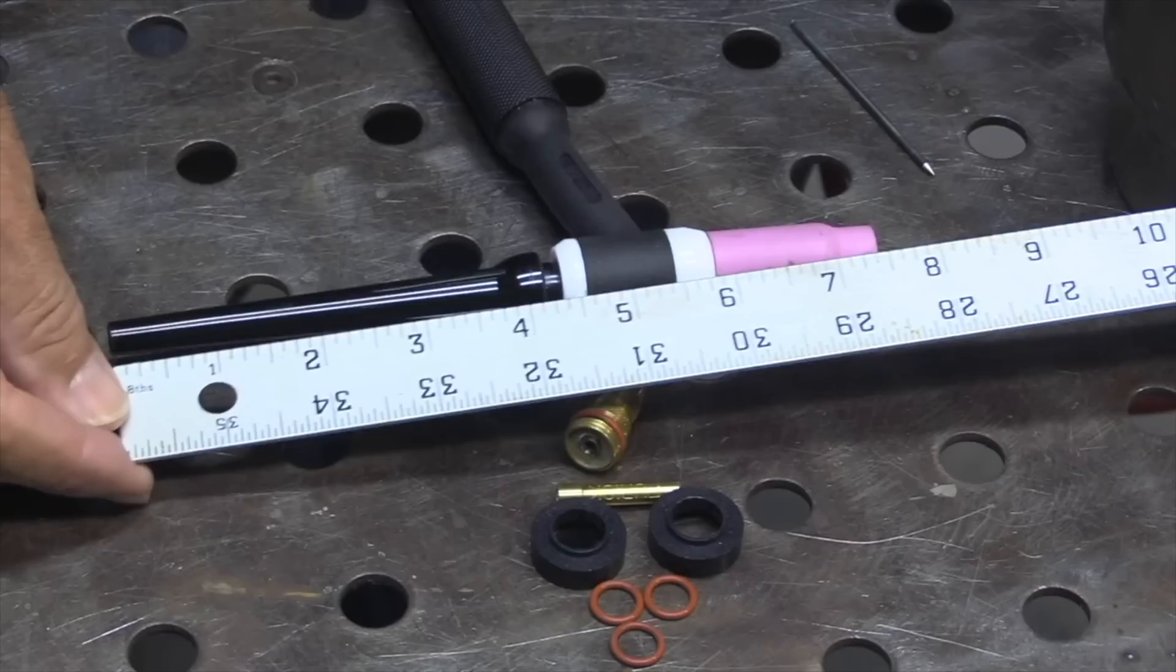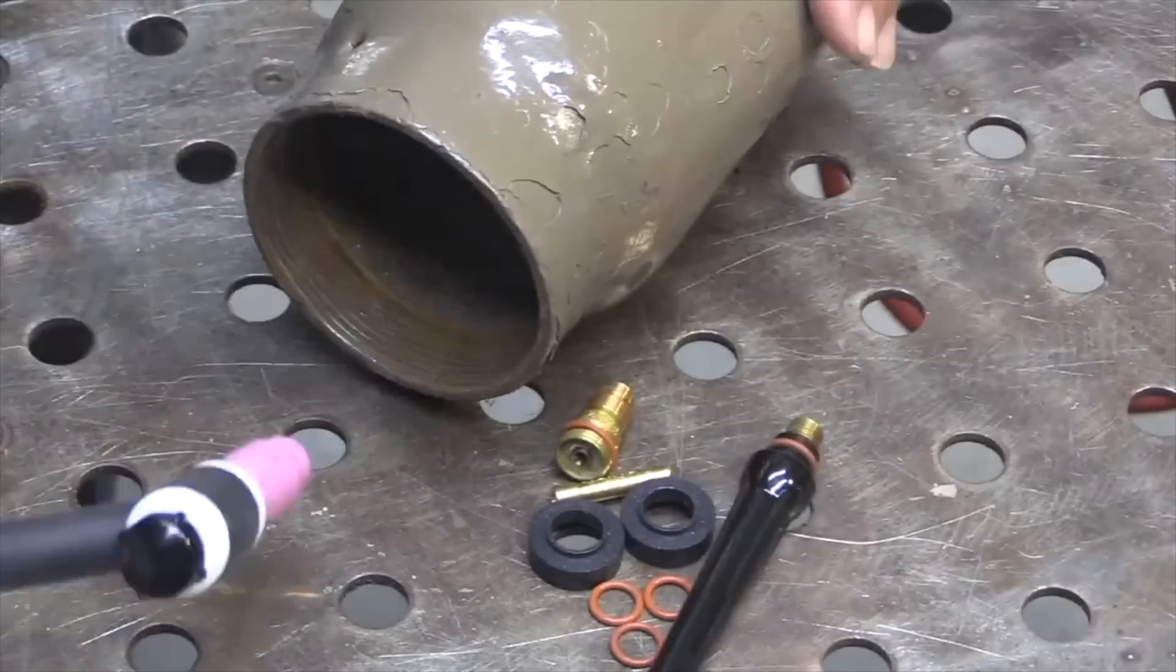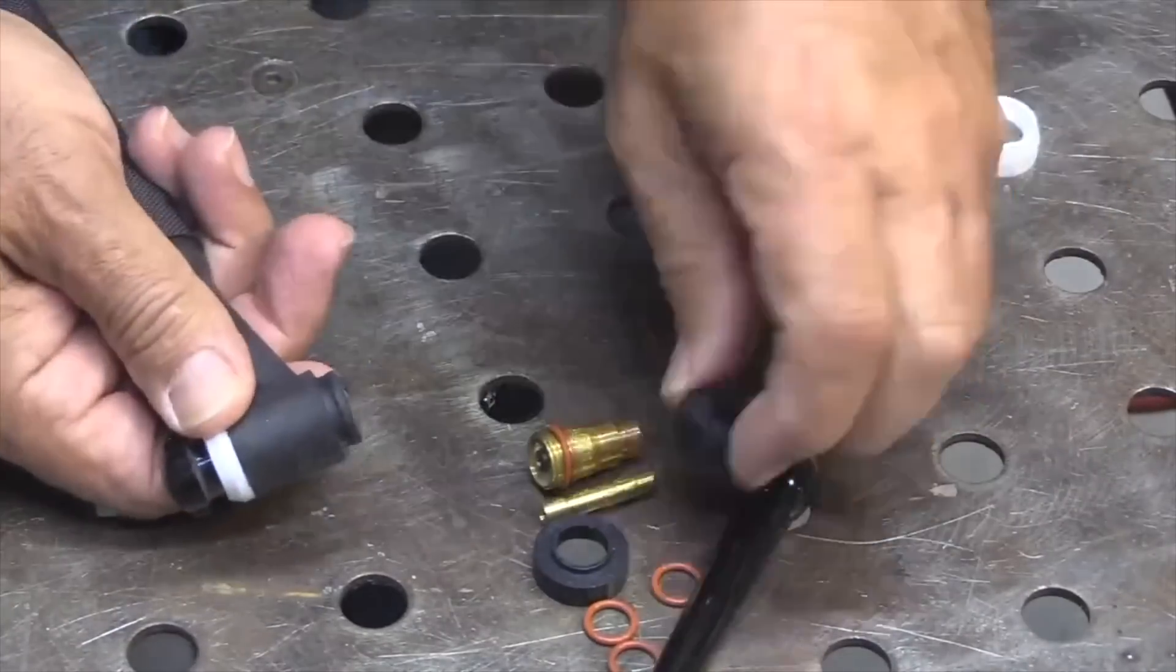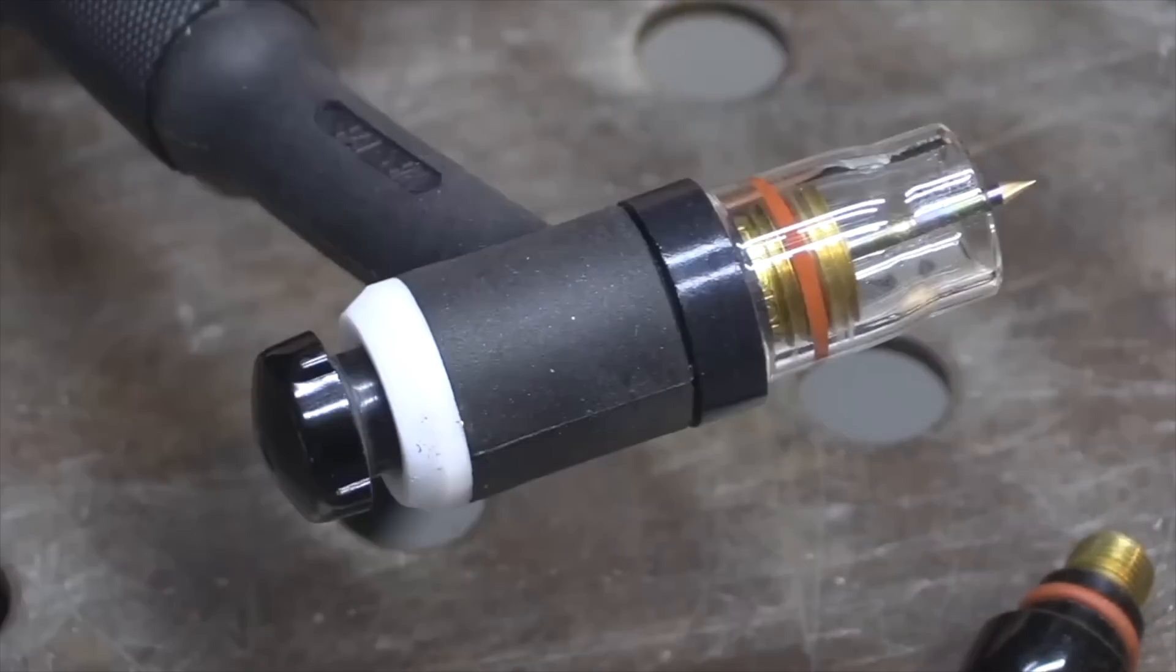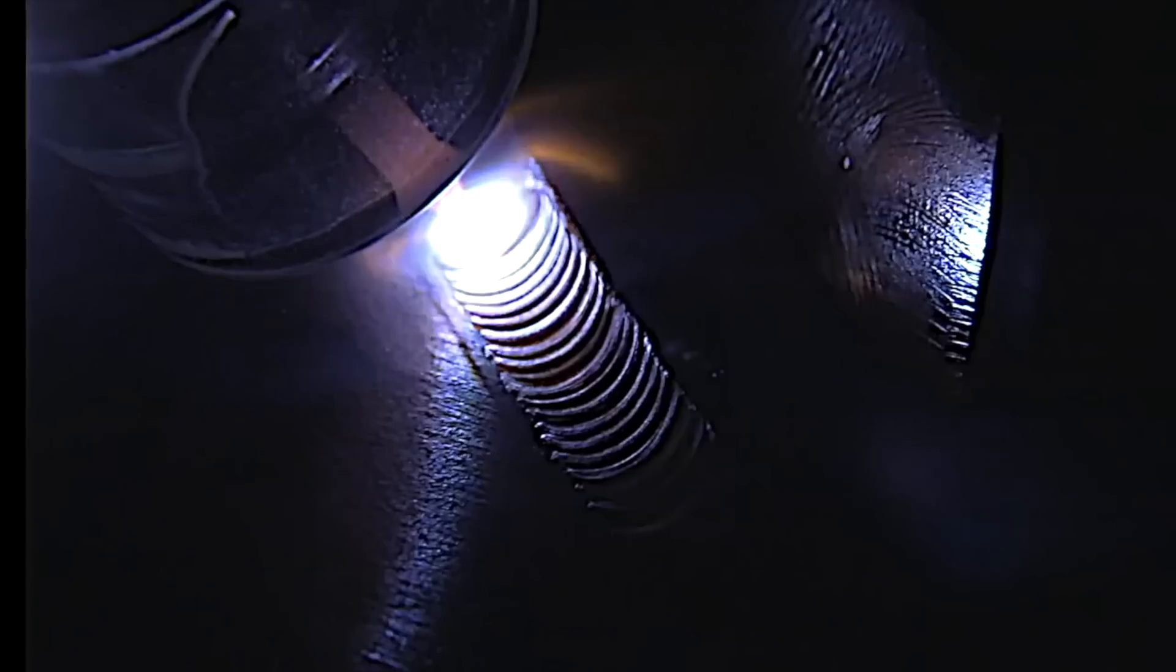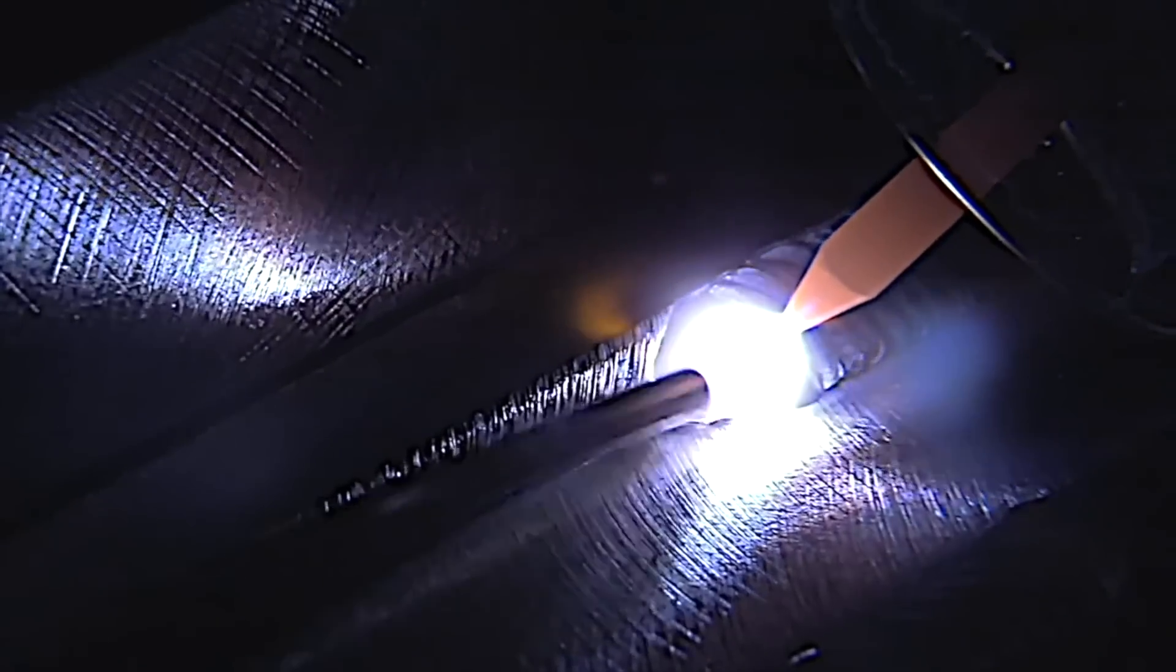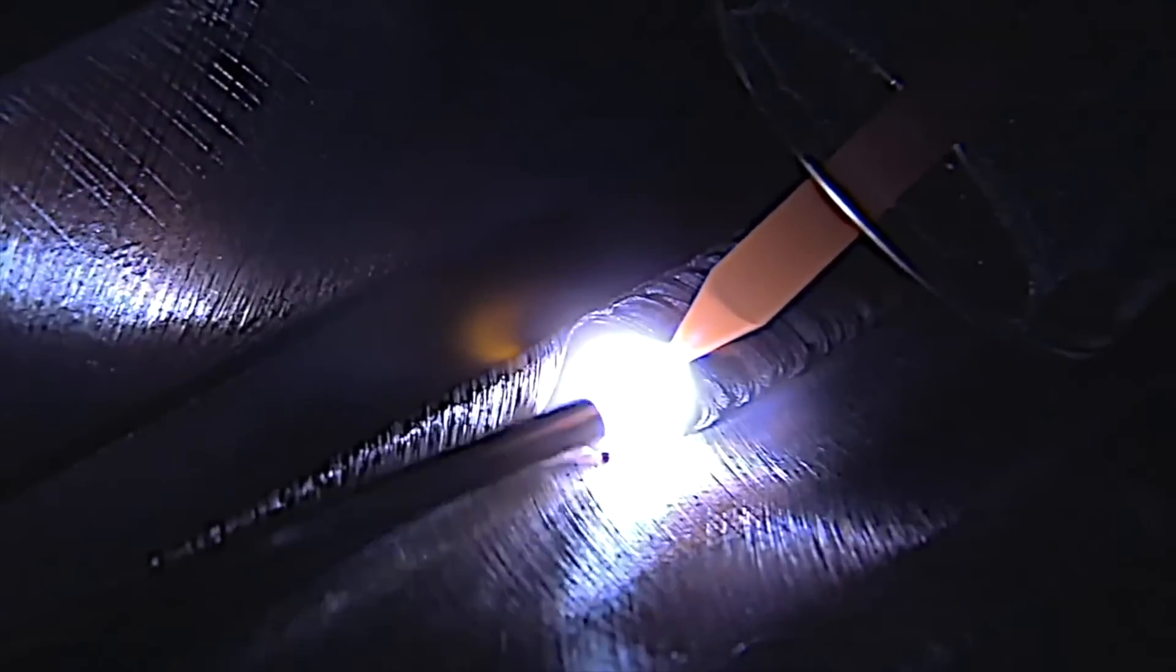So let's take a look at swapping out the normal hardware, the stuff that comes with most torches, with the Furek Arsenal kit hardware. One benefit that you notice right away is it just shrinks the overall size of the torch, just kind of makes it more maneuverable, makes it be able to reach into tighter spots. And the clear cup that comes with it, the 8 cup, really lights things up.